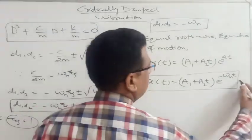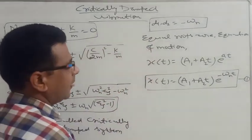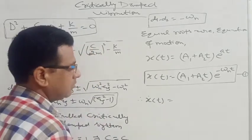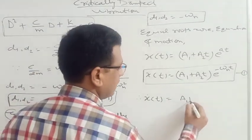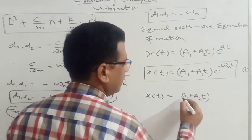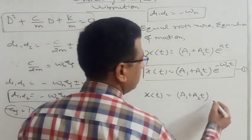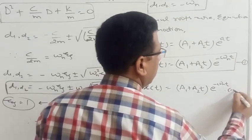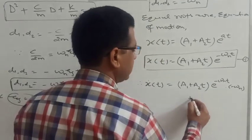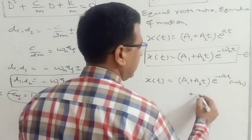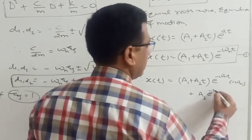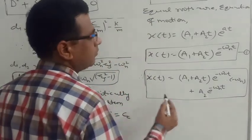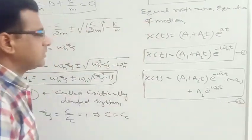To find the velocity equation, we differentiate the displacement equation. Differentiating x = (a1 + a2·t)·e^(−omega_n·t) with respect to time: the result is x_dot = a2·e^(−omega_n·t) plus (a1 + a2·t)·(−omega_n)·e^(−omega_n·t). This is the velocity equation for the critically damped system.